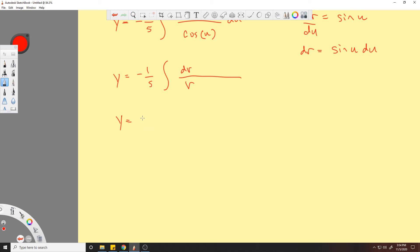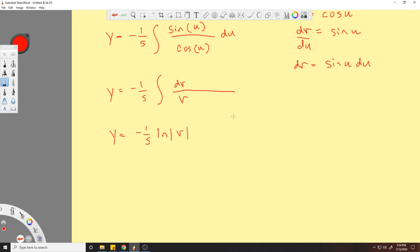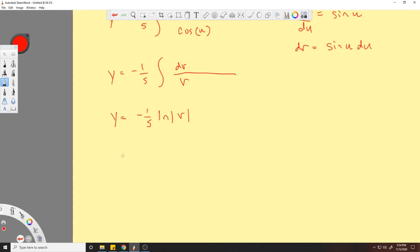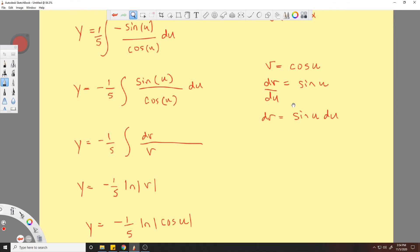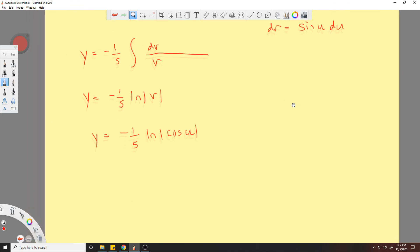y equals negative 1/5 ln of v. Now we plug in our v to be cosine of u. Cosine of u, right? Now we plug in our u to be 5x.